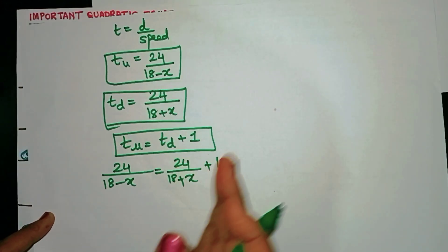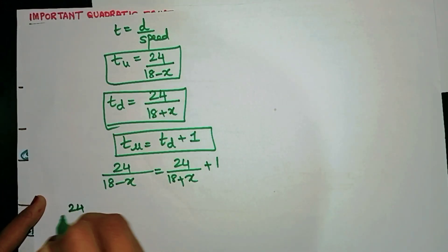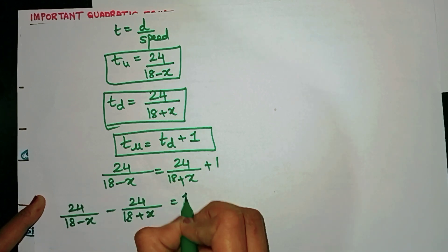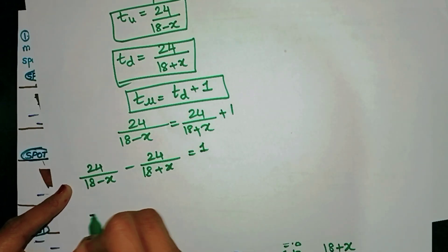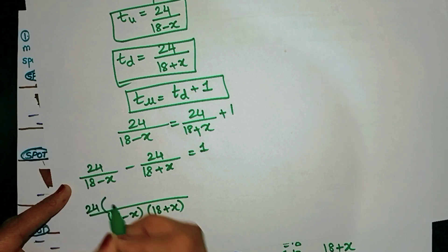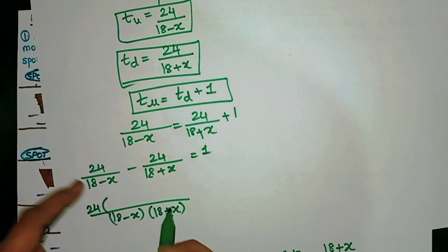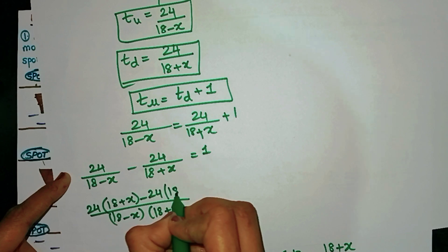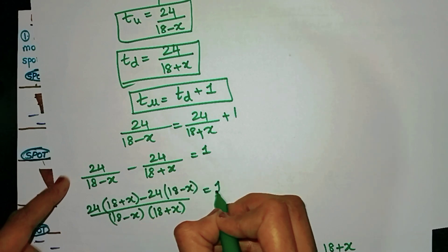It's better if I bring all the x to one side. Now as you can see, this is pure algebra. I take the LCM. This is my LCM. So it will be 24. Now 18 minus x is already here, so I will get 18 plus x. I hope you are understanding this. This equals 1.